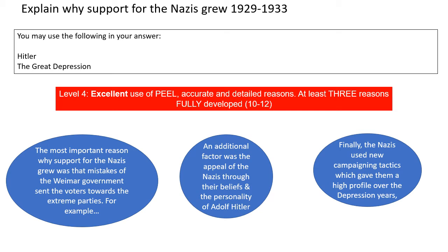If you look at my blue circles, I've given you some starter sentences — they're just adapted from our diagram. So you could begin this answer: 'The most important reason why support for the Nazis grew was the mistakes of the Weimar government that sent the voters towards the extreme parties. For example...' and then you could develop this with your ideas and understanding, and include a link back to the question.